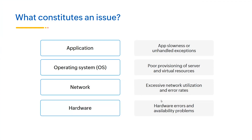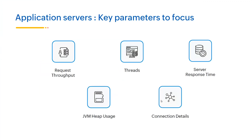We're going to quickly go over the key parameters you need to monitor for application servers, servers, and databases. For application servers, JVM heap usage is a key metric because it helps you identify memory-intensive parts of the application, detect memory leaks, and determine how much memory should be allocated to a Java application. Applications Manager can help you check the current Java usage. You can also see the server response time — how long servers take to respond to a particular request. Additionally, you can monitor threads generated by your application; if a particular thread utilization goes beyond the set value, a warning can be generated.